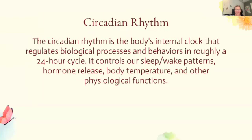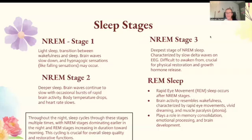The circadian rhythm is the body's internal clock that regulates biological processes and behaviors in roughly a 24-hour cycle. It controls our sleep-wake patterns, hormone release, body temperature, and other physiological functions. For the AP exam, you need to know the different sleep stages we go through in our sleep cycle.